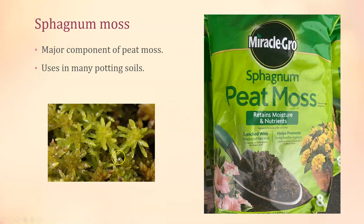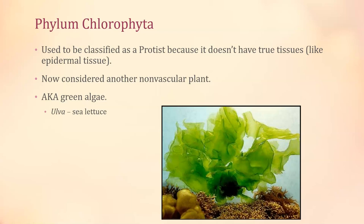Next, phylum Chlorophyta. Taxonomy is always in flux — this used to be considered a protist because it doesn't have true tissues; it doesn't have leaf, stem, or roots. Based on DNA evidence it really does belong in the plant kingdom, but it's a very primitive plant.